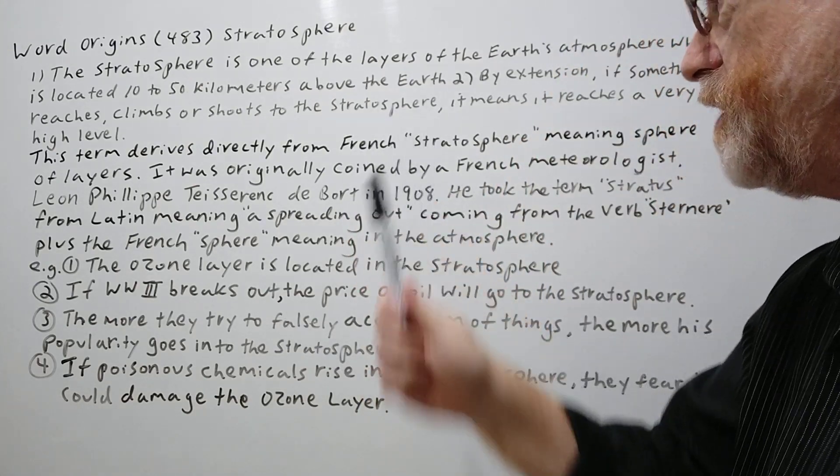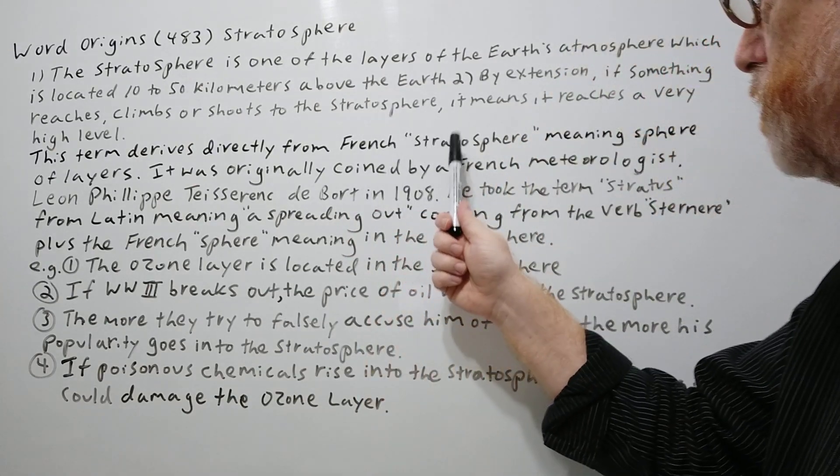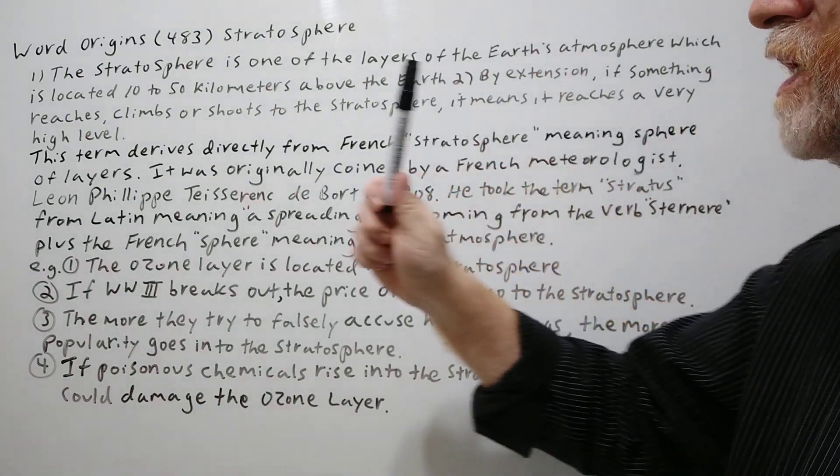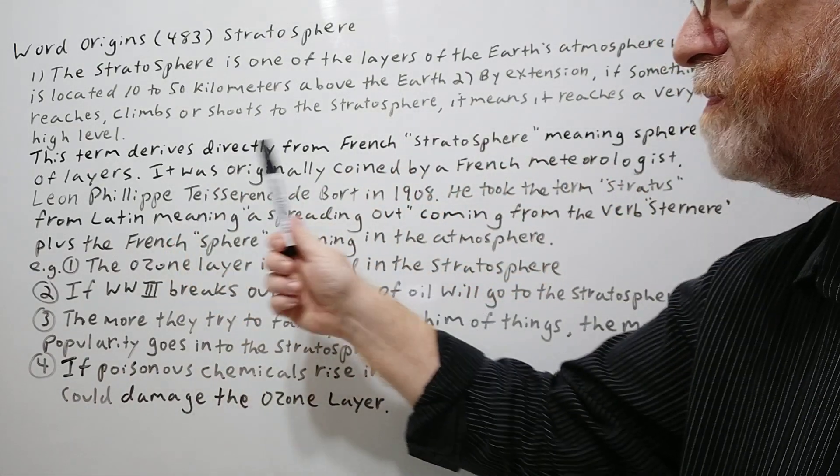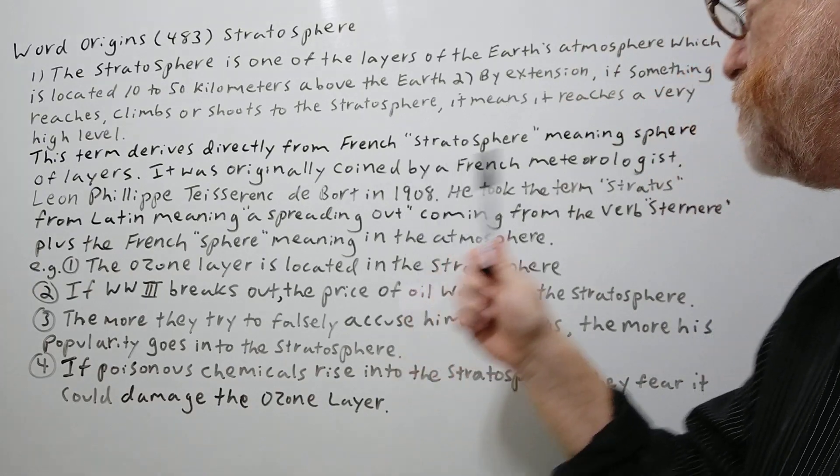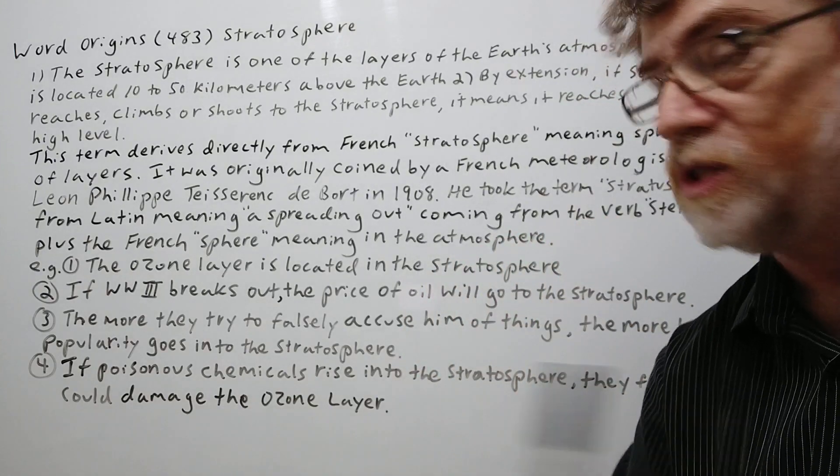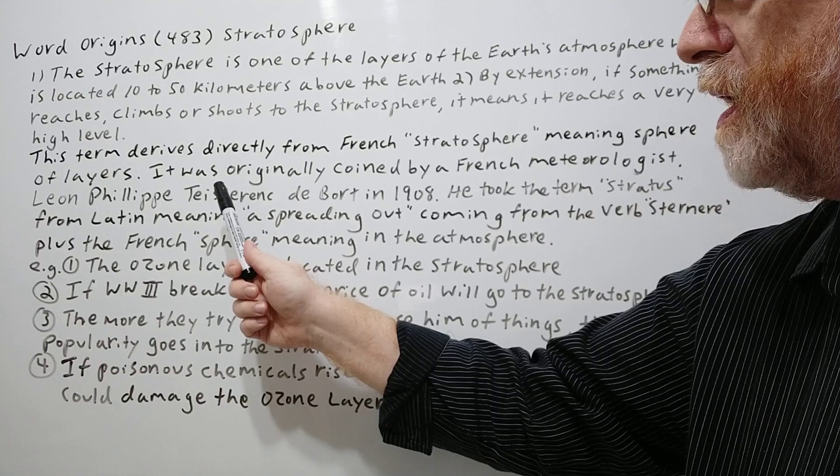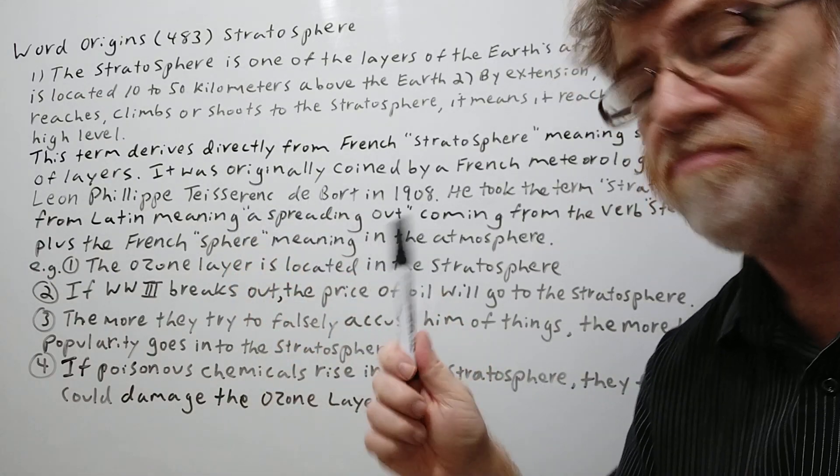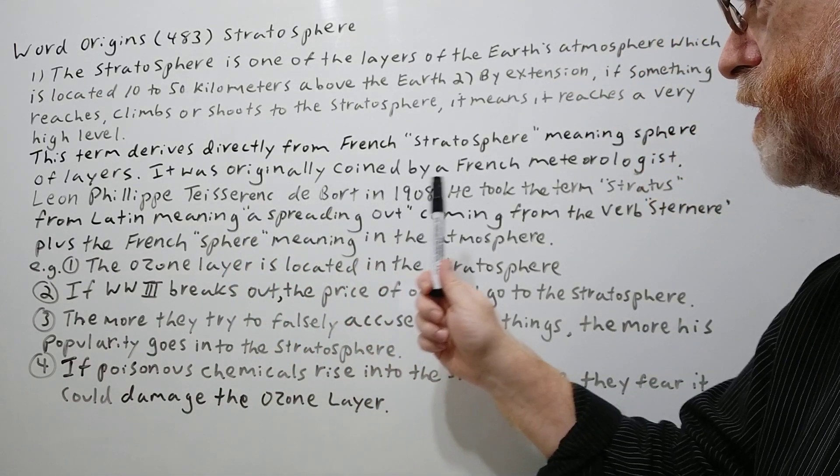Let's continue. The term derives directly from French 'stratosphere,' meaning a sphere-like of layers. It was originally coined by a French meteorologist, Leon Philippe Tesseney de Bort, in